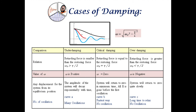In overdamping, since the retarding force is greater than the restoring force, the value of omega is negative. The system will take a long time to return to zero and there will be no oscillations.